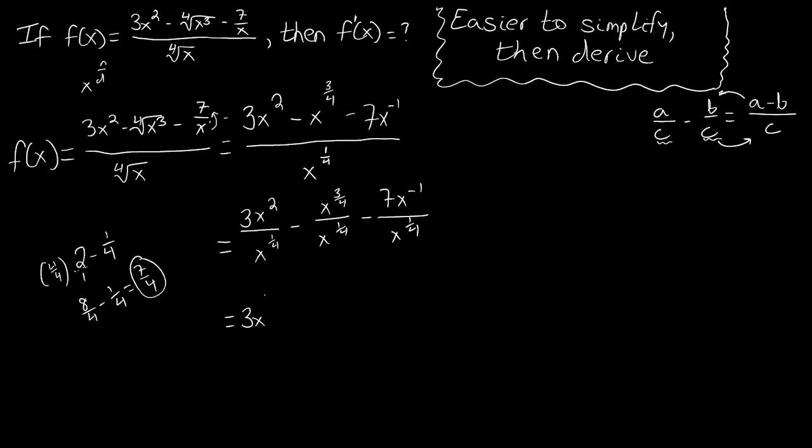The second term is 3 fourths minus a fourth. So what that turns into is x to the 2 fourths or x to the one-half. If you can write it either way, I simplified the fraction. We recognize x to the one-half more readily as the square root of x than we do x to the two-fourth.